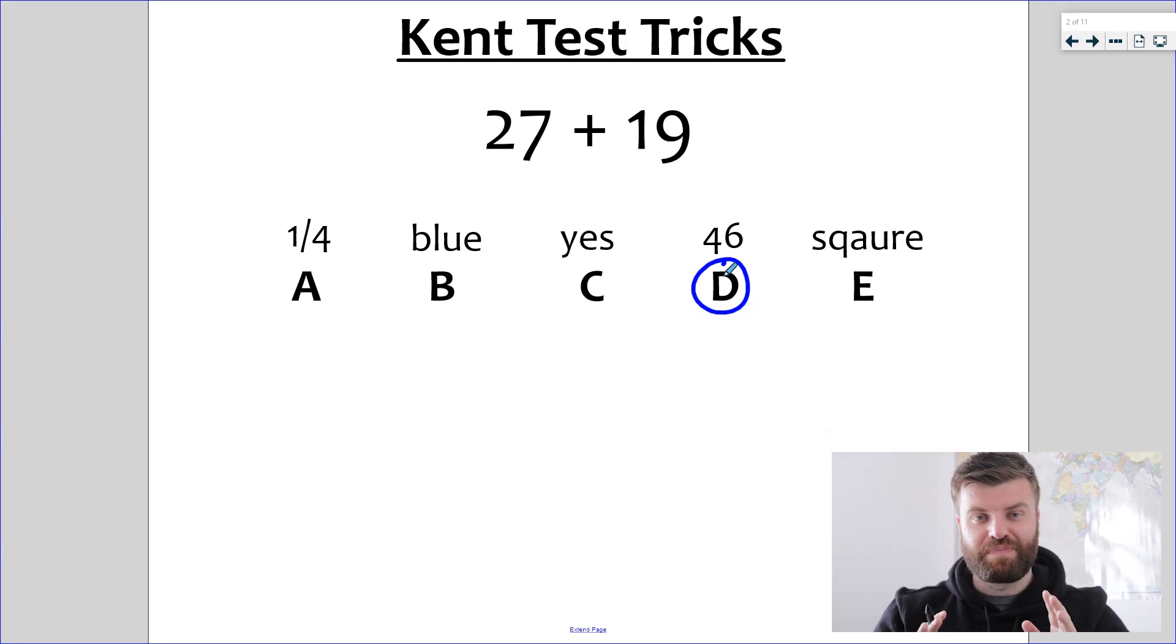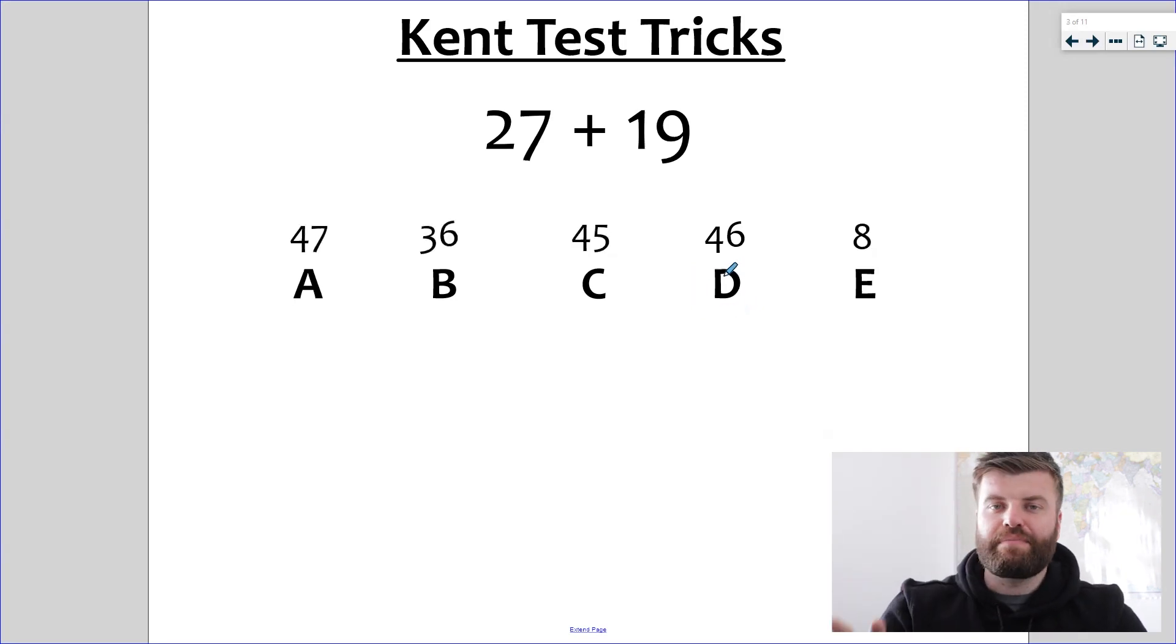Now, the Kent Test is not going to do this. It's not going to ask you 27 plus 19 and give you the option to write down blue as an answer. Absolute nonsense. What they do, though, is pick wrong answers that you're likely to end up at if you have a misconception and get something wrong. Again, let me show you exactly what I mean. Here's the same example, 27 plus 19, but this time more realistic options.